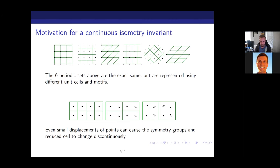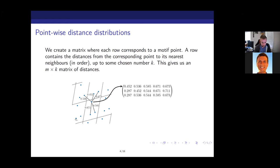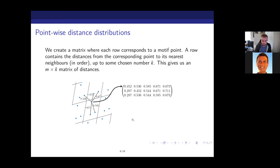With that motivation set up, we can jump into how we construct the pointwise distance distribution. Let's start with a periodic set — three points in a random unit cell. For each point in the motif we record the distances to its nearest neighbors, getting a matrix with one row for every motif point. Each row lists the distances to that point's nearest neighbors in order; in this case I've shown distances to its five nearest neighbors. We measure distances outside the unit cell, not just inside.